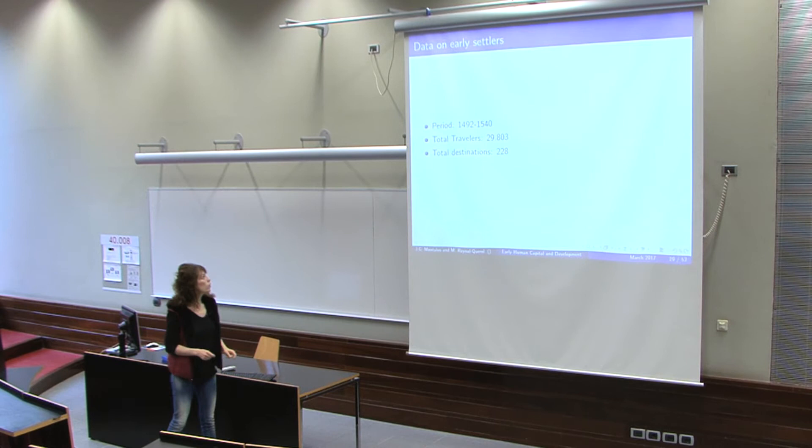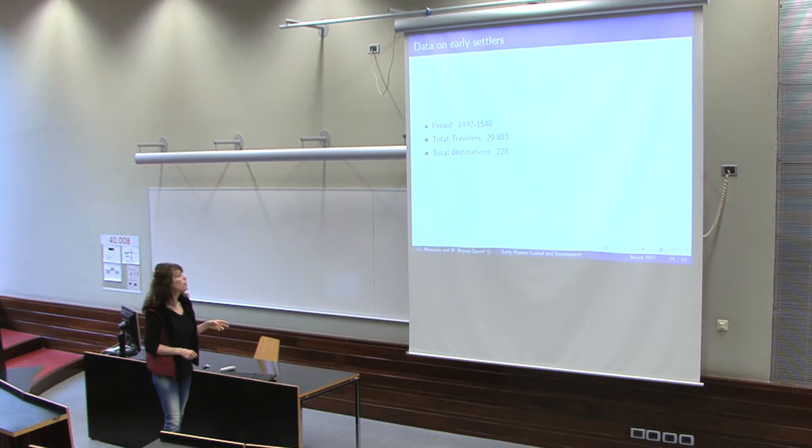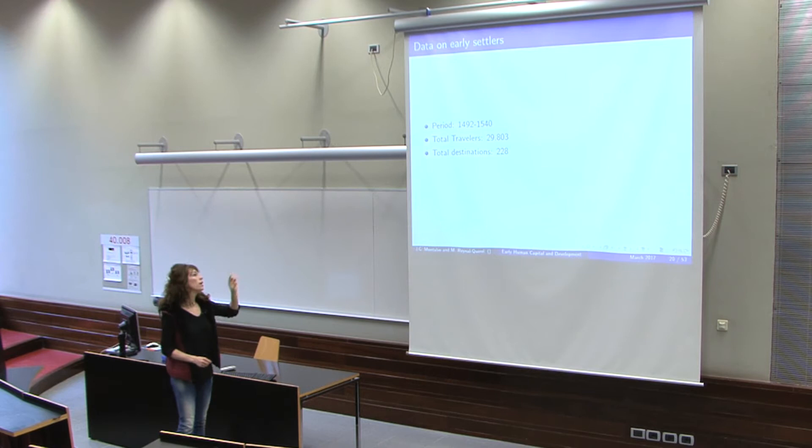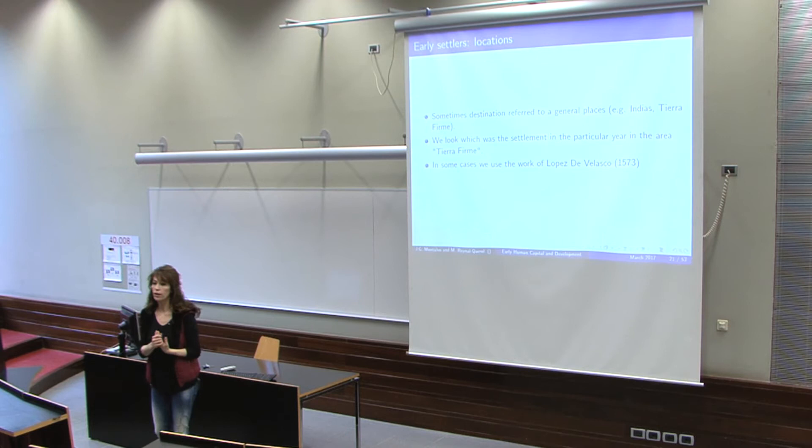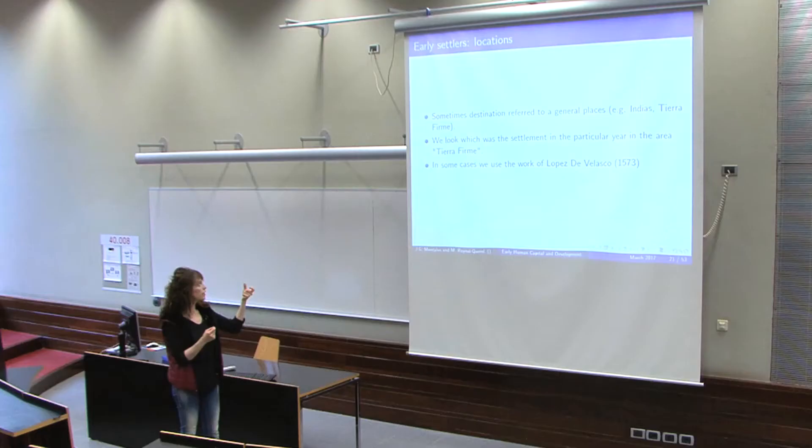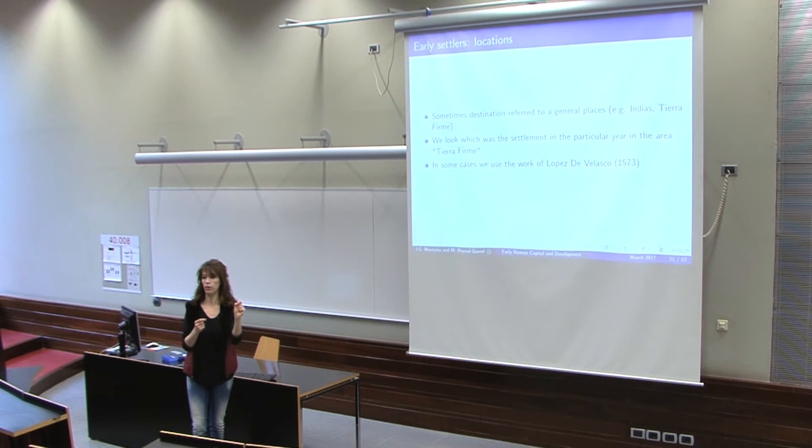We have codified information from 1492 until 1540, covering 29,803 travelers and 228 total destinations. This codification was not easy to do. At the time, many destination settlement points were not very clear — sometimes we just have entries like 'moved to India' or 'Tierra firme.' What we did is figure out what 'Tierra firme' meant at a particular point in time, and in many cases we discovered that at that specific moment it referred to just one settlement, so the person was associated with that particular settlement.